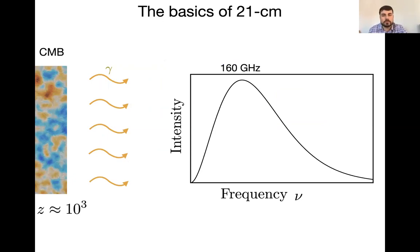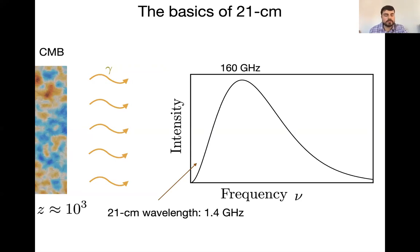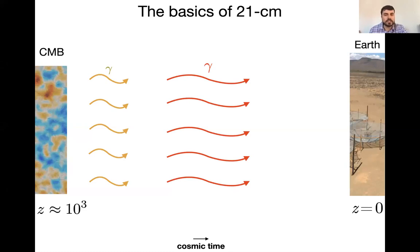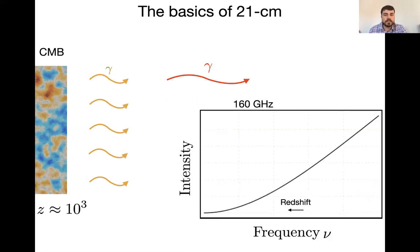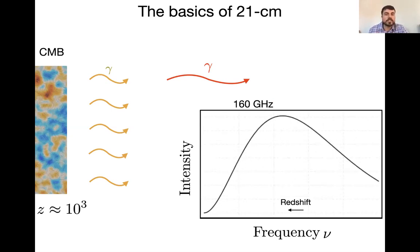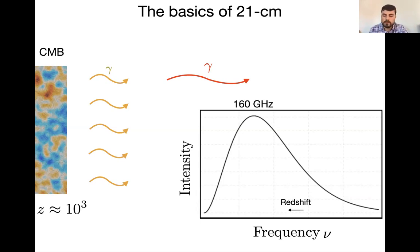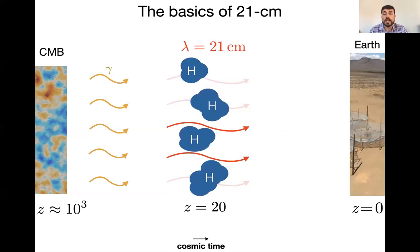The basic idea of 21-centimeter cosmology is that the CMB is a blackbody, which means it has photons at all frequencies, peaking at about 160 gigahertz. The 21-centimeter line is all the way in the low-frequency tail at 1.4 gigahertz. The CMB, like all cosmic things, redshifts — so the spectrum today doesn't look like it did when it was emitted. As you're redshifting, if you encounter hydrogen, some of the CMB photons will have a wavelength of 21 centimeters at some redshift by construction, and they can get resonantly absorbed by neutral hydrogen — going from the singlet to the triplet state, and you lose one of the photons.